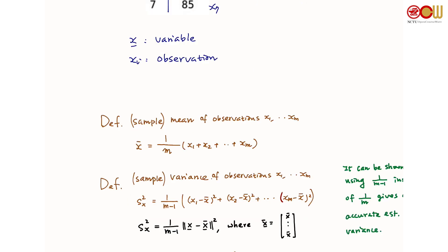We also define the sample variance of the observations x1 to xm. We take the difference of x1 and x-bar (x-bar is the mean), square it, do the same for x2 and x-bar, sum up all these squares, and divide by n minus 1. This is what we call the sample variance of the observations, denoted s_x squared.